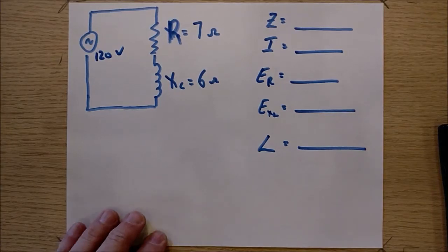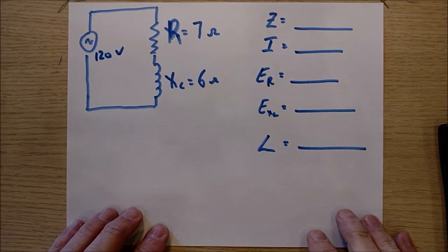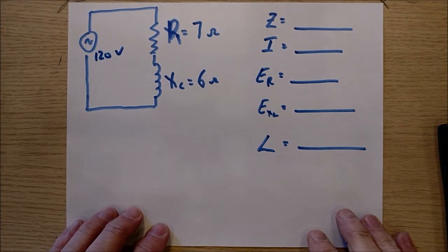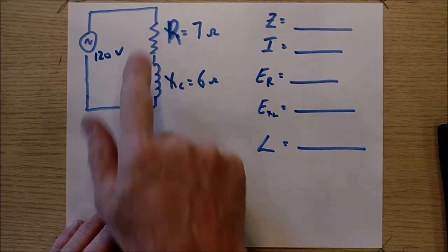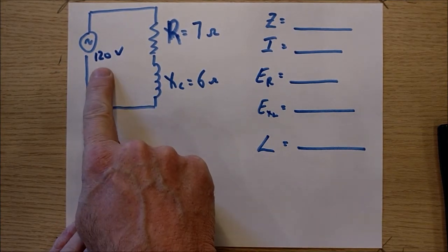Hey guys, welcome back. What I got here is another circuit on my little board here. It's a RL series circuit and resistance looks like it's 7 ohms, XL is 6 ohms, 120 volts.